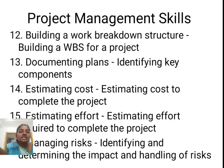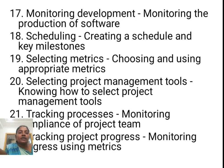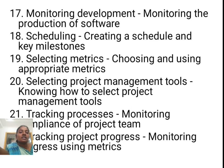The next category is Project Management Skills. The first criteria is Building a Work Breakdown Structure for a Project. The next one is Documenting Plans and Identifying Key Components. The next one is Estimating Cost to Complete the Project. The fifteenth one is Estimating Effort Required to Complete the Project. The sixteenth one is Managing Risk — Identifying and Determining the Impact and Handling of Risk. The seventeenth one is Monitoring Development and Monitoring the Production of Software. Scheduling — Creating a Schedule and Key Milestones. Next is Selecting Metrics — Choosing and Using Appropriate Metrics. Next is Selecting Project Management Tools — Knowing how to Select Project Management Tools. Next is Tracking Process — Monitoring Compliance of Project Teams. Next is Tracking Project Progress — Monitoring Progress Using Metrics.